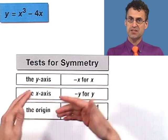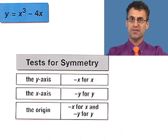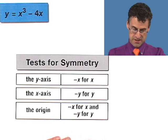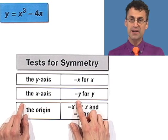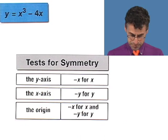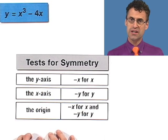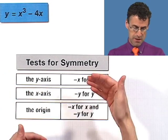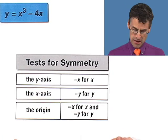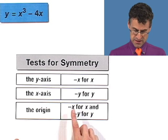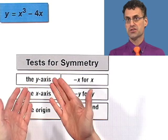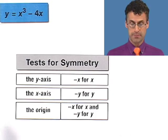Correspondingly, with the x-axis — whether things above the x-axis correspond to what happens below — you replace y with negative y and see if you get the exact same equation. And with respect to the origin, it's symmetric with respect to both the y-axis and x-axis at the same time, so replace both x with negative x and y with negative y and see if you get the original equation.